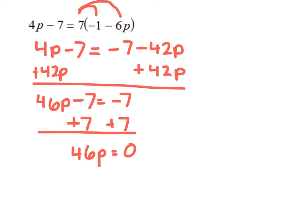The last thing I have to do is undo the multiplication of 46 and p by dividing both sides by 46. That gives me p equals 0.